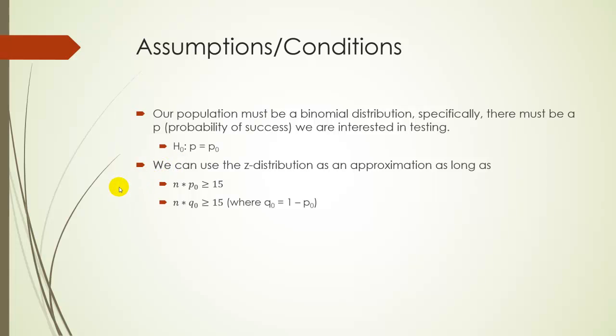So we're going to start this off by saying P is equal to some claim, some number, and our Ha could be right tail, left tail, or two tail test, just like before. As far as how large is a large sample, and the reason why we care about this is because we're going to use the Z distribution as an approximation of our sampling distribution, and it only works if our sample size is large. We really need n times this hypothesized proportion to be at least 15. And you also need n times the probability of failure under the null hypothesis to be at least 15, where this Q0 symbol is just 1 minus P0.